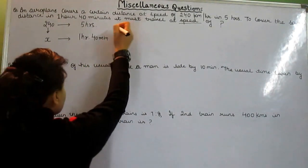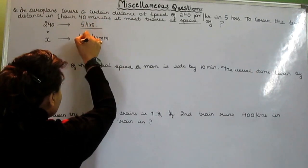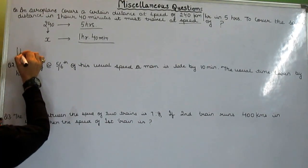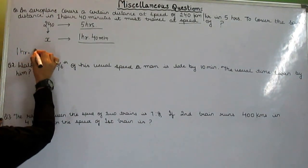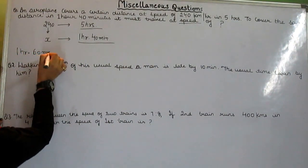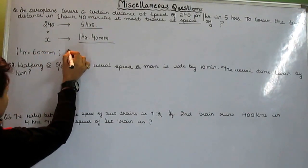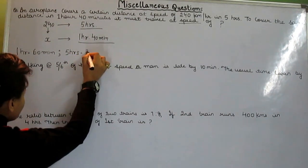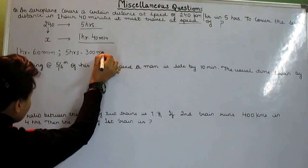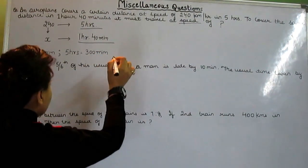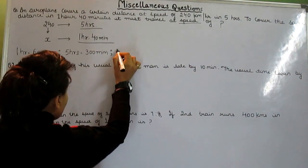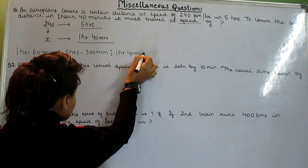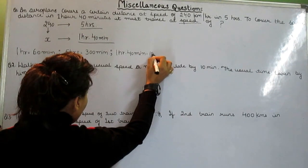So our next thing is 5 hours and 1 hour 40 minutes. 1 hour is equal to 60 minutes. Likewise, 5 hours is equal to 300 minutes, and 1 hour 40 minutes is equal to 100 minutes.